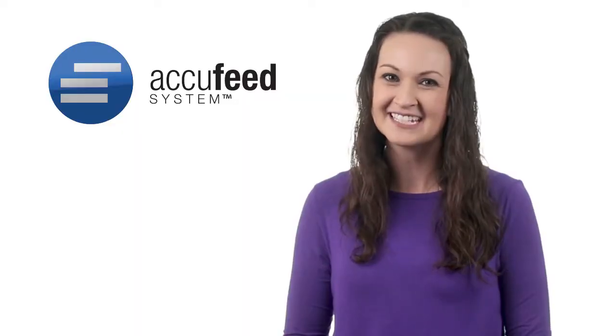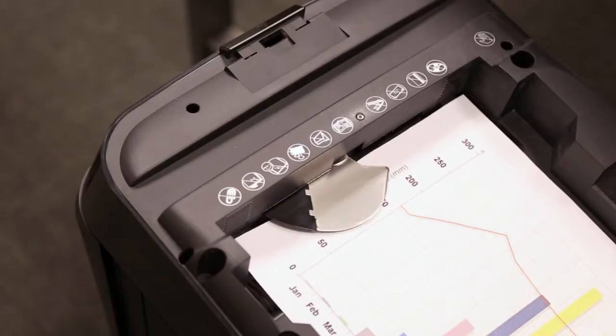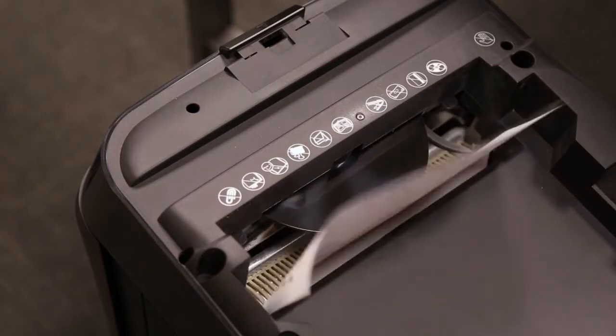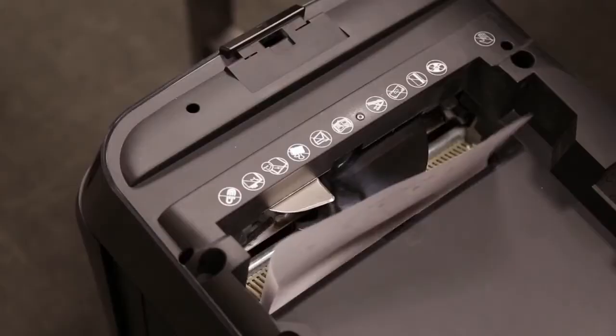The machine's patented AccuFeed technology leverages a rotating auger to quickly and accurately shred your documents. This allows the AutoMax to power through a stack of 200 sheets in just minutes.